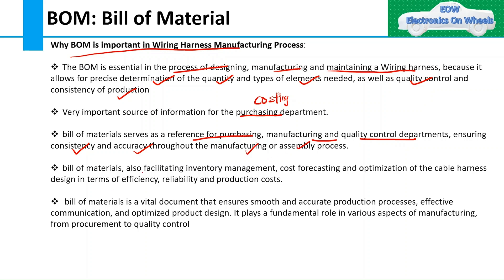Bill of materials also facilitates inventory management, cost forecasting, and optimization of the cable harness design in terms of efficiency, reliability, and production costs. Bill of materials is a vital document that ensures smooth and accurate production processes, effective communication, and optimized product design. It plays a fundamental role in various aspects of manufacturing, from procurement to quality control.